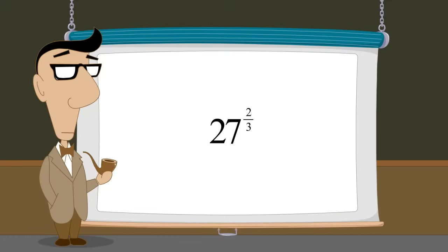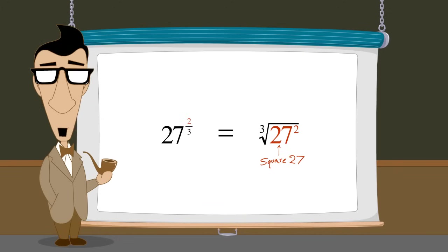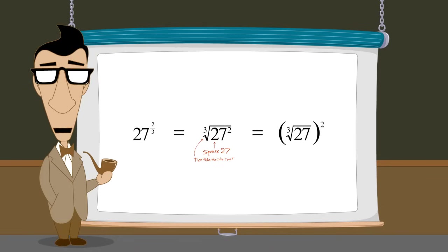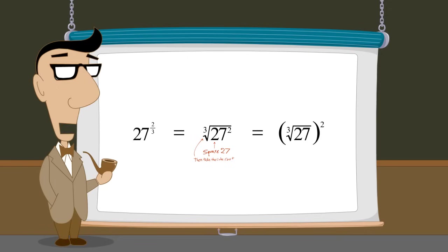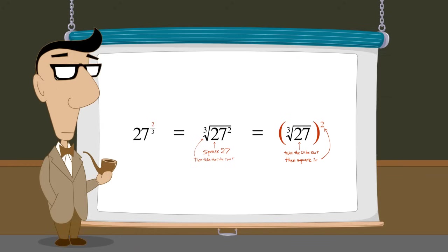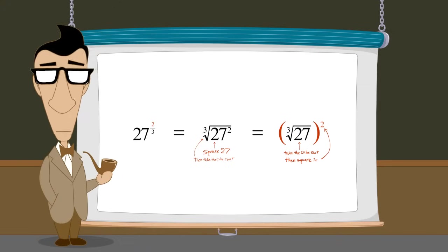So we have two options for evaluating an expression with a fractional exponent. We can raise the base to a power specified by the numerator, and then take the root specified by the denominator. Or, the operations can be performed in the opposite order, taking the root first, and then raising the result to a power. Either way, we get the same answer. However, the amount of work that we have to do can be a lot different. Let's do this example both ways and see why.